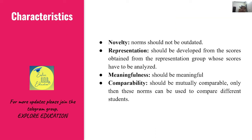Characteristics of norms: कुछ विशेष गुण होते हैं। पहली बात — novelty: norm should not be outdated। समय-समय पर update होना चाहिए — Flynn effect के कारण IQ standards बदल रहे हैं क्योंकि information bombardment से students बेहतर perform कर रहे हैं। Norm should be representative — it should be developed from the scores of the representative group. It should be meaningful and there should be comparability — it should be mutually comparable only then norms can be used to compare different students.